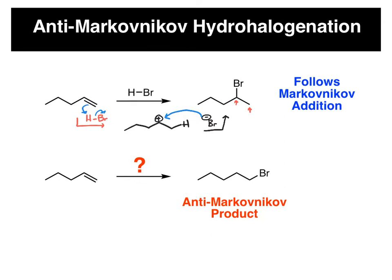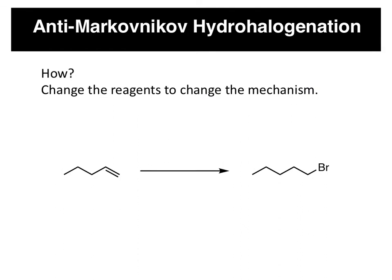So what we want to look at here is how do we do the opposite of this? Basically, get the anti-Markovnikov addition product where the bromine is on the less substituted carbon and the hydrogen is now on the more substituted carbon. Our typical solution if we want to change the product is we change the reagents to change the reaction mechanism.